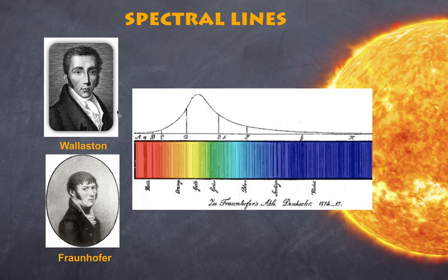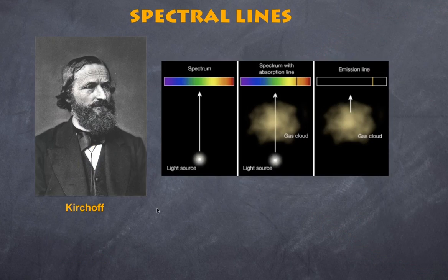Now, Wollaston incorrectly suggested that these were just simply the separations between the colors. But nonetheless, it was not able to be explained why these lines existed across the spectrum. In the 1850s, Kirchhoff, and you may know Kirchhoff also in terms of Kirchhoff's law involving electricity, also developed some understanding of spectral lines.